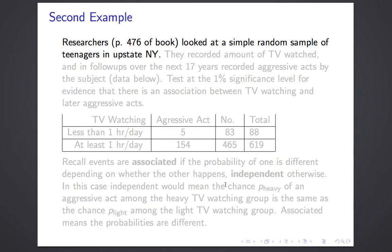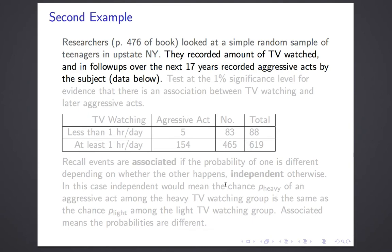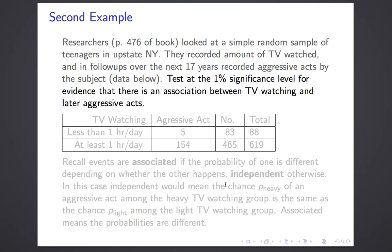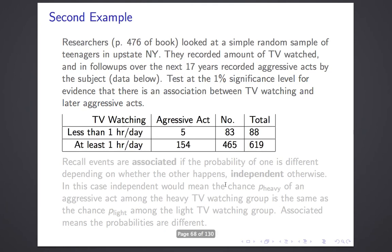Let's do another example with a different flavor. Researchers looked at a simple random sample of teenagers in upstate New York — this time one sample. They recorded whether each teen watched more or less than an hour of TV a day, then waited 17 years to see if the teenager had engaged in any aggressive acts. We're going to test at the 1% significance level for evidence that there's an association between TV watching and later aggressive acts.